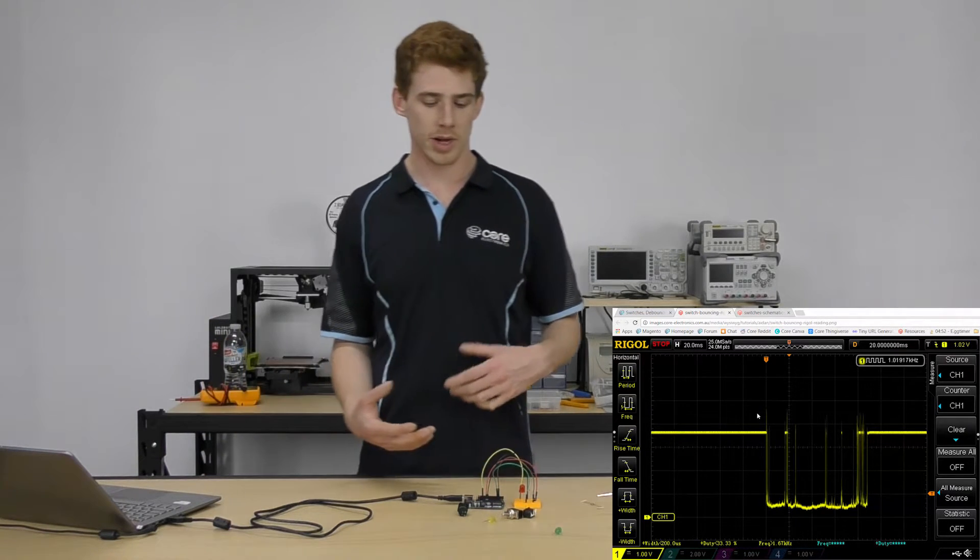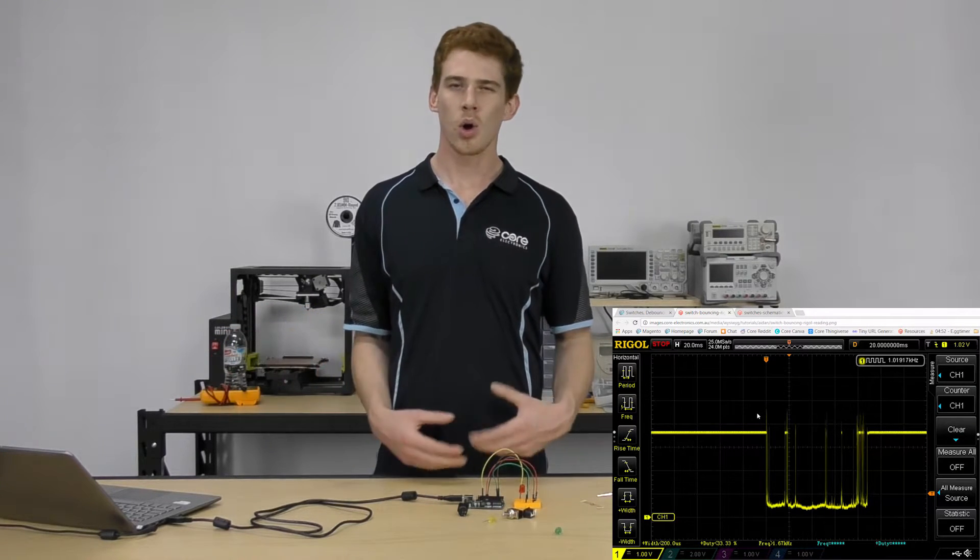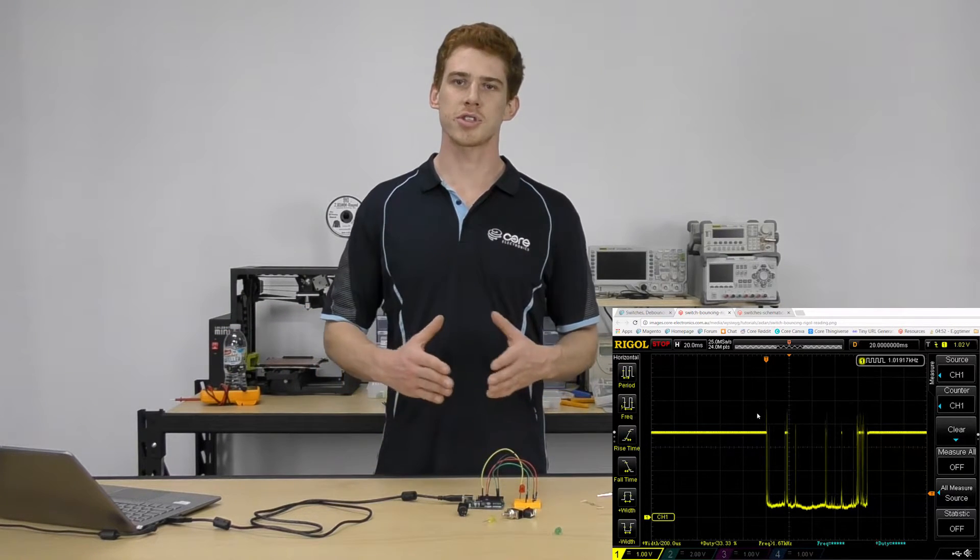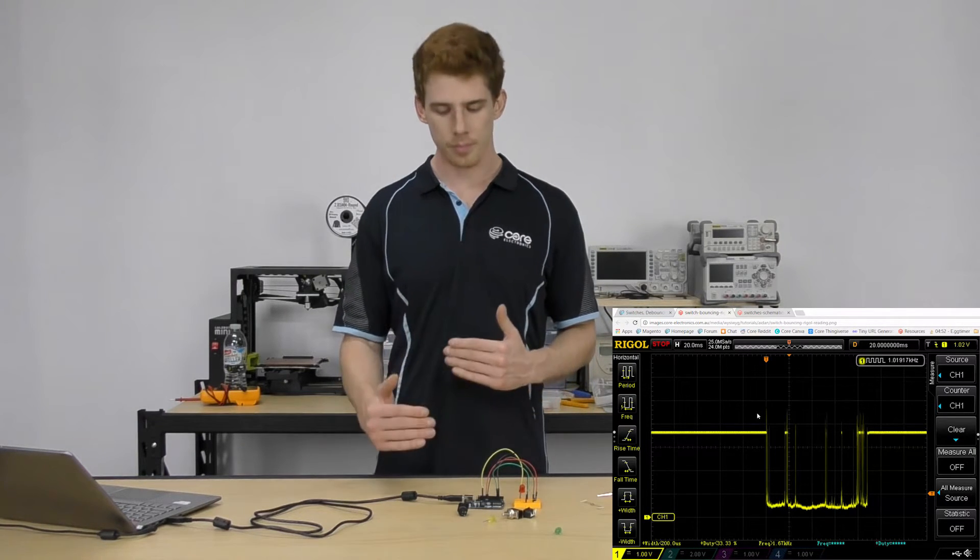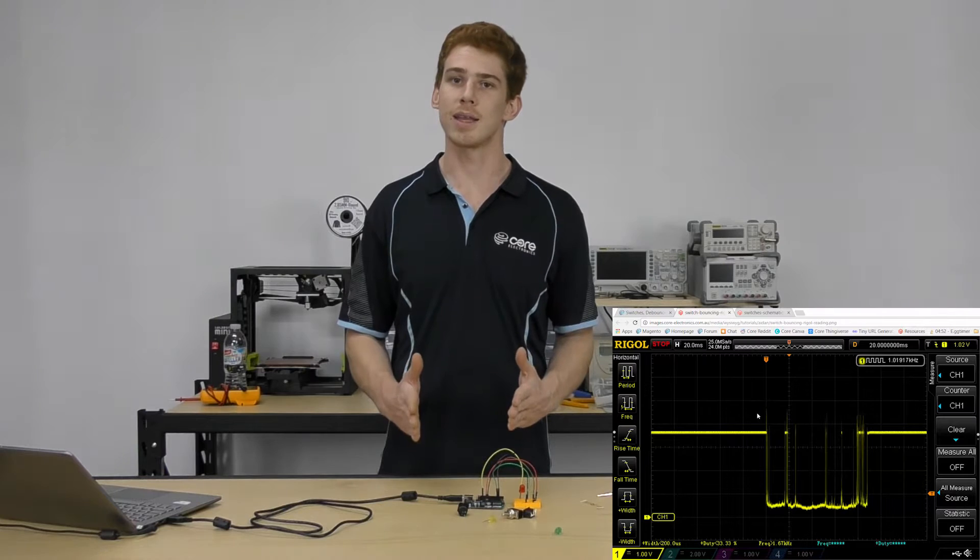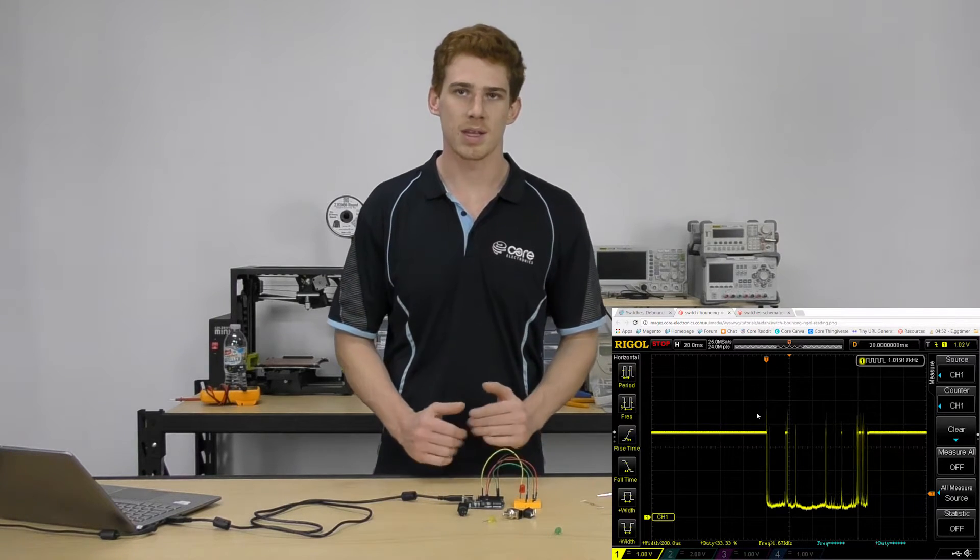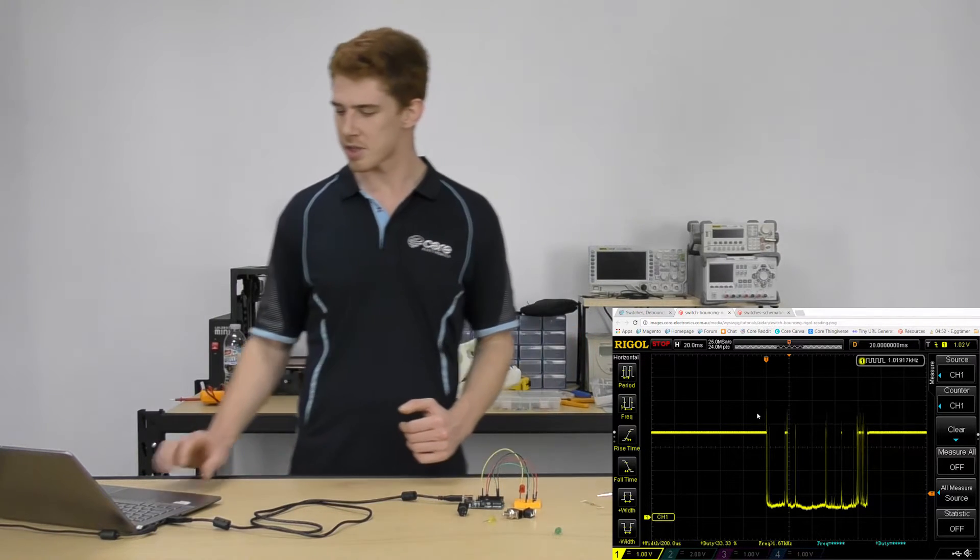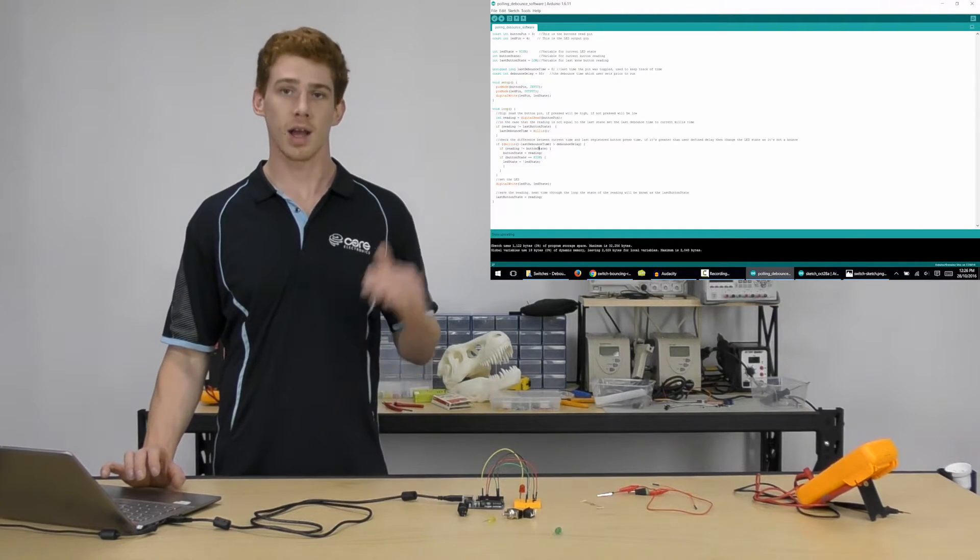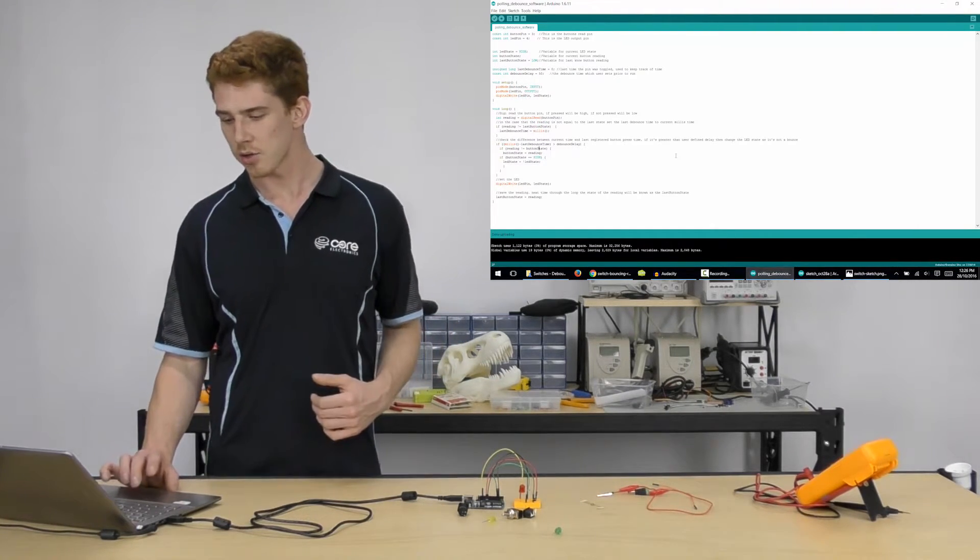Essentially what we can do is create hardware solutions that manage that, or we can create a software solution that'll just delay the reading. So it'll trigger on a certain change of that button state, but it will also delay reading it again until the debounce delay is up. So let's have a look at that sketch a bit closely. I've written the sketch and the code is available underneath this video if you wanted to take a look at it.